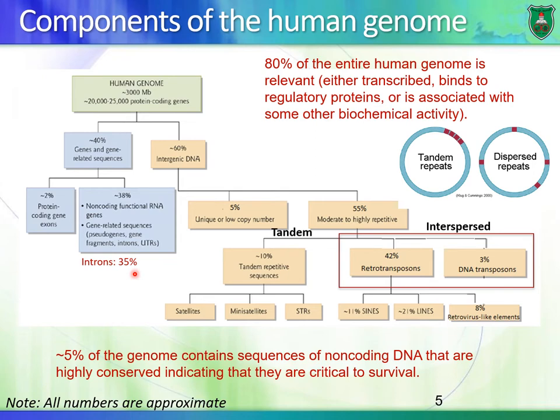These are all rough numbers; they are not the final ones. In the past few years, studies have shown that about 70% of the human genome can be transcribed, so it's not only 2% or part of the 38%. 60% of the human genome is basically composed of intergenic DNA — DNA sequences between gene or gene-related sequences.